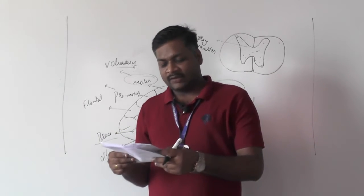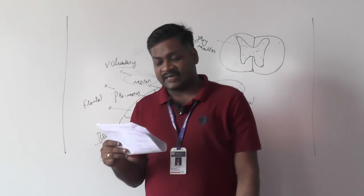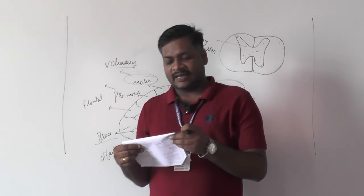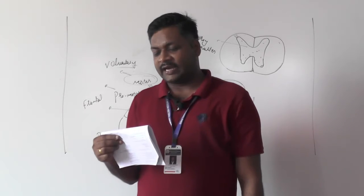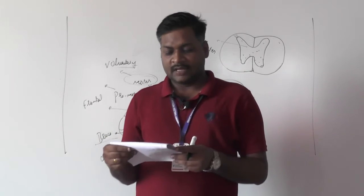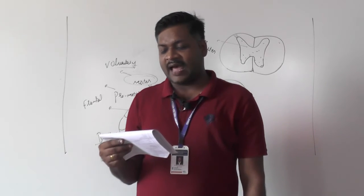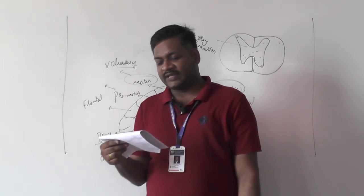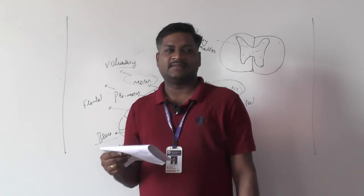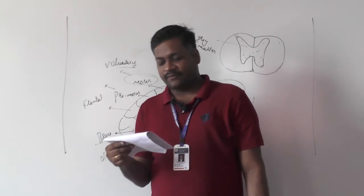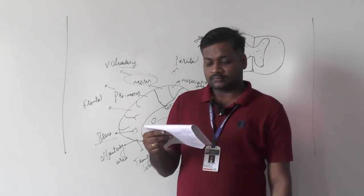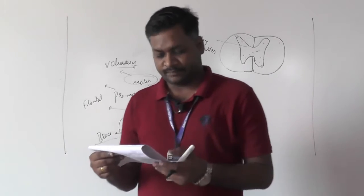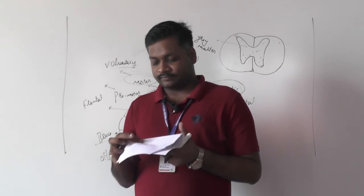Question 127: an irregular cornea results in strabismus — option C. Question 128: astigmatism can be corrected by using cylindrical lenses — option D. Question 129: opacity of the lens in the eye leads to myopia — option C. Question 130: the abnormality of the eye that leads to blindness is myopia — option A, correct for question 131.